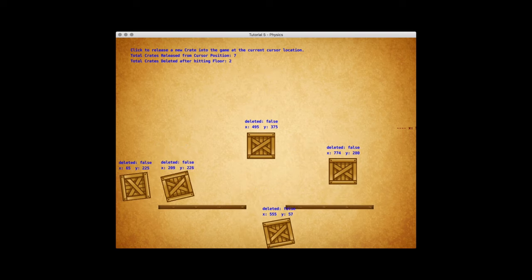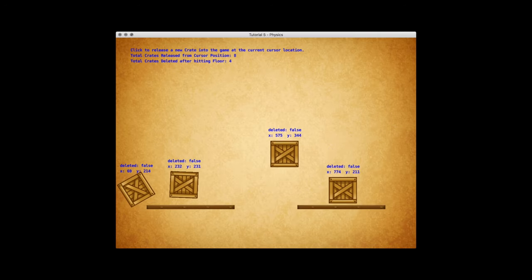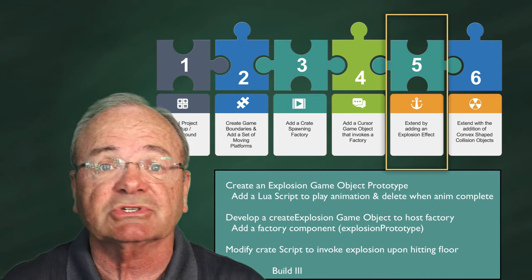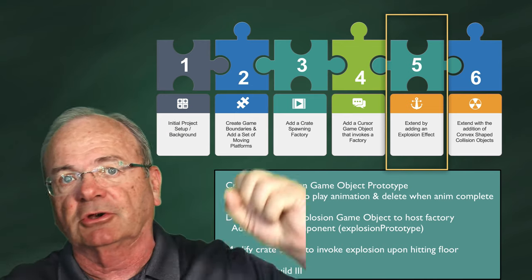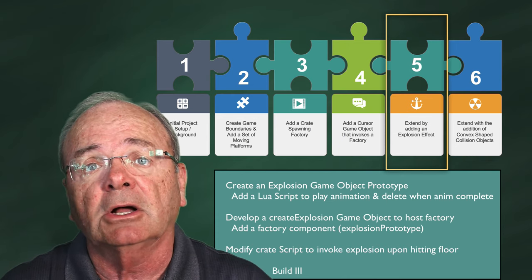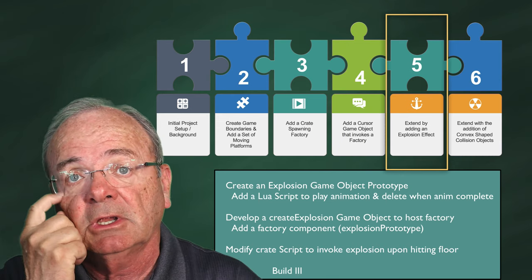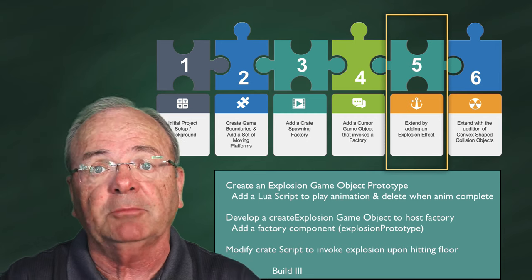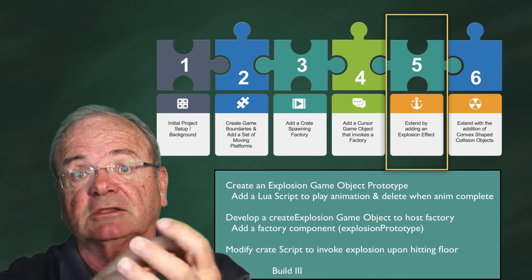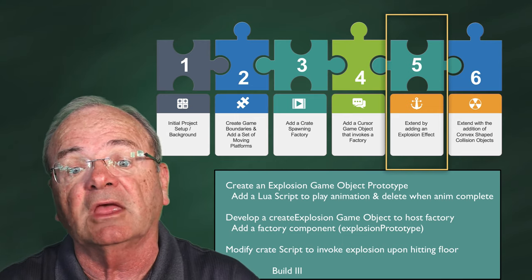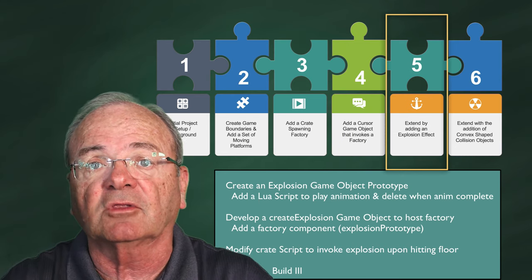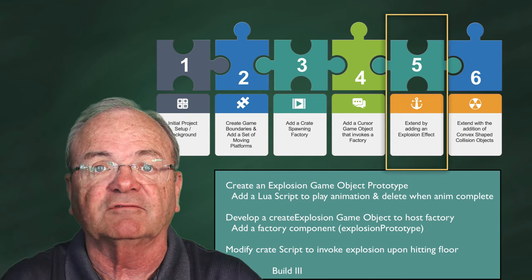We want to add a little pizazz to our games, and explosions are a simple way to do that. In Phase 5, we're going to build the explosion game object. We'll start with a game object prototype that has a sprite with an animation group image — we want it to explode out and suck back in — plus a script. Then we'll create the game object that hosts a factory pointing back to that prototype. At the end we'll have build 3 to verify functionality.